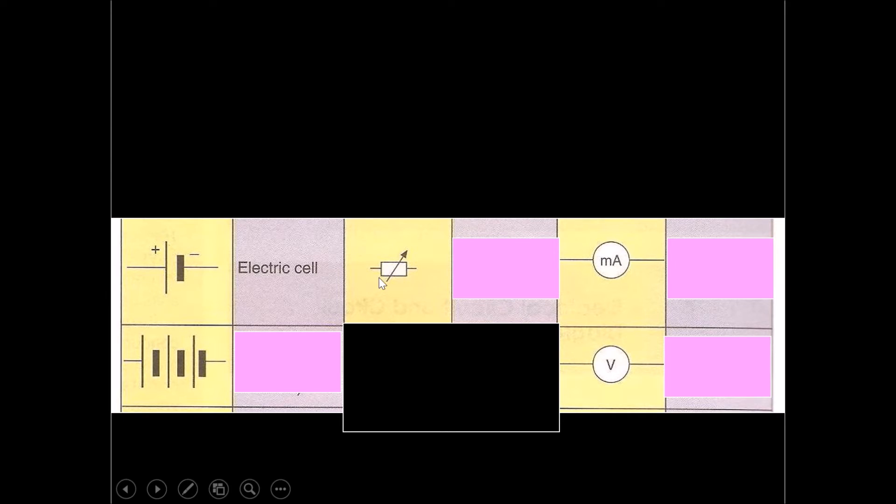Over here, if there's a rectangle and there's an arrow poking through it in a diagonal way, this is called a variable resistor or a rheostat. This is in comparison with the fixed resistor before. The fixed resistor would not have the arrow going through.